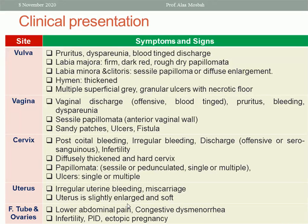If the uterus is affected, there may be irregular uterine bleeding, and if the patient is pregnant, miscarriage may happen. The uterus is slightly enlarged and a little soft. If the fallopian tube and ovaries are affected, the patient will complain of symptoms like PID. She may also complain of infertility and may have a complication like ectopic pregnancy because of tubal pathology.